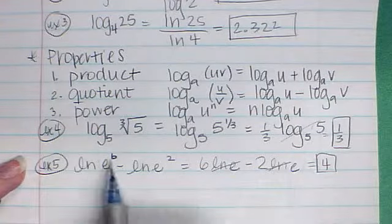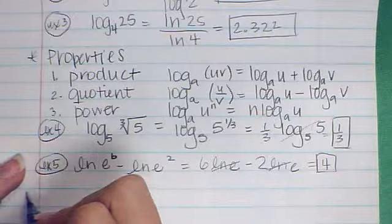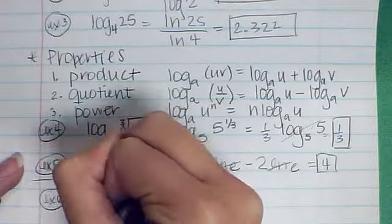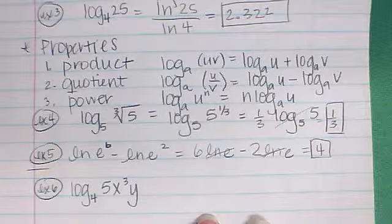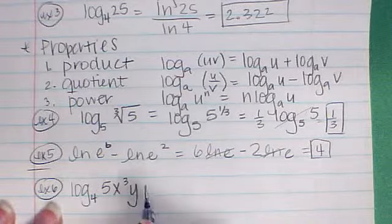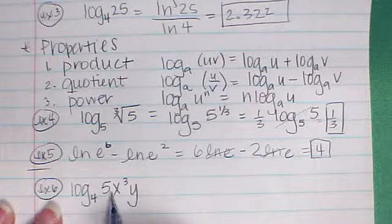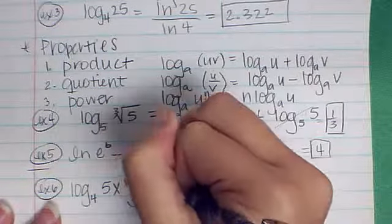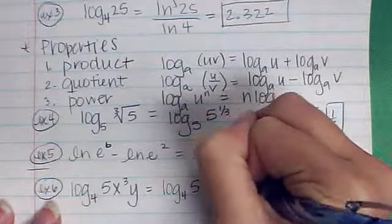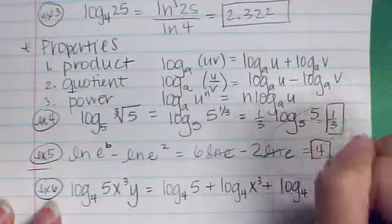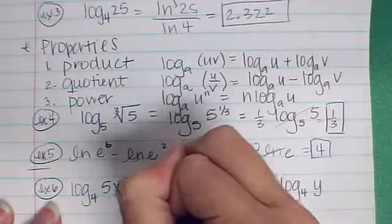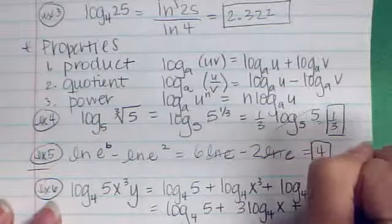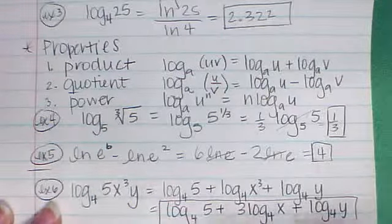To find the expanded notation using these properties is the next thing we want to look at. If we do example 6, if I want to find the log base 4 of 5x cubed y and I want to expand that, I am going to notice that these things are being multiplied. So I'm going to start by adding them together because of the product property. So I have the log base 4 of 5 plus the log base 4 of x cubed plus the log base 4 of y. The only other thing I can do is take this power and bring it out front, which is the log base 4 of 5 plus 3 log base 4 of x plus log base 4 of y.